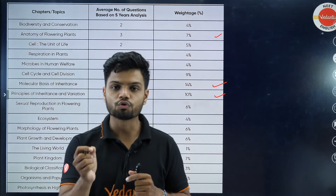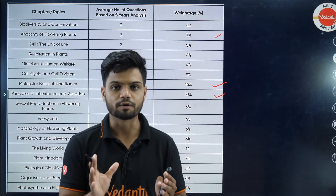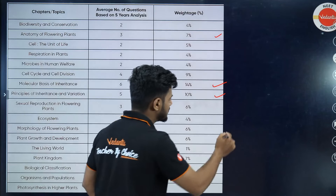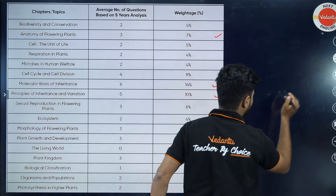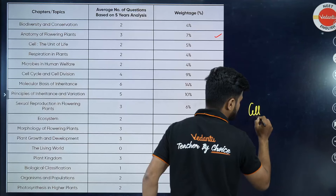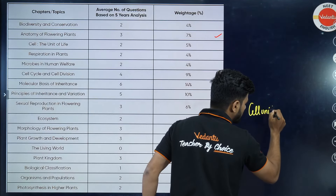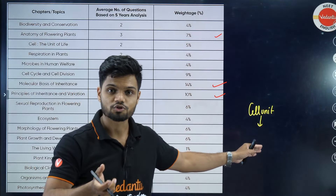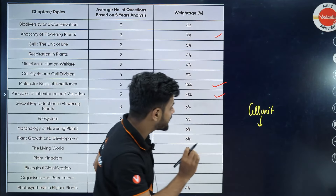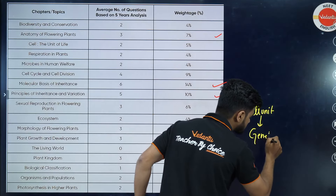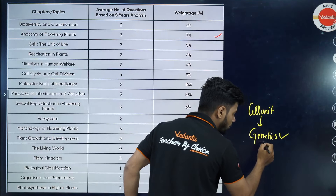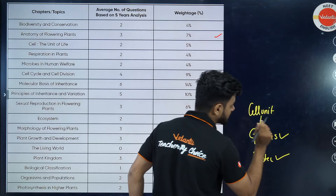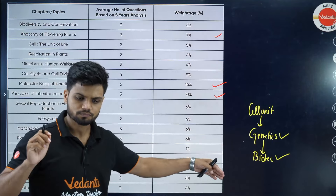If you're just starting your NEET journey and don't know where to begin, I would advise you to start with the Cell chapter — the entire Cell unit. Once you finish the entire Cell unit, which includes big chapters like Biomolecules, you'll be able to understand Genetics clearly. And once you understand Genetics, the Biotech unit becomes very easy to understand. That's the entire flow.